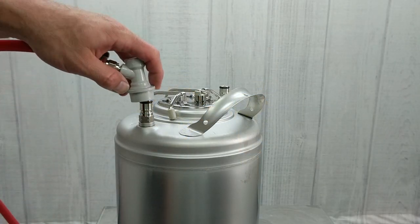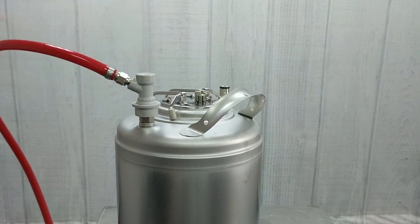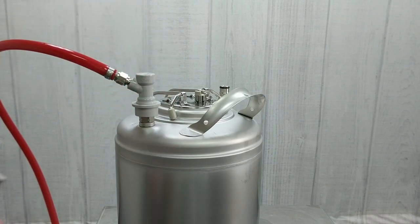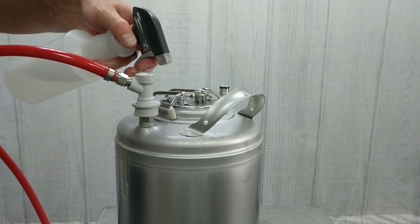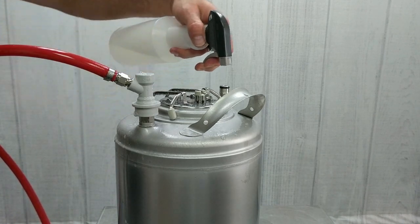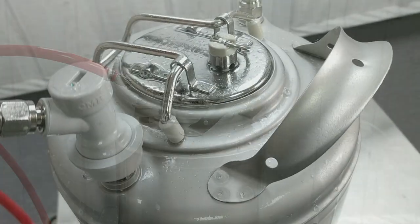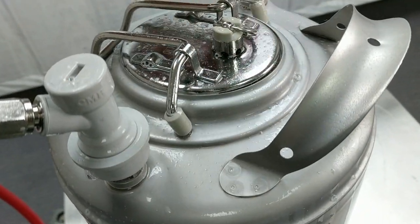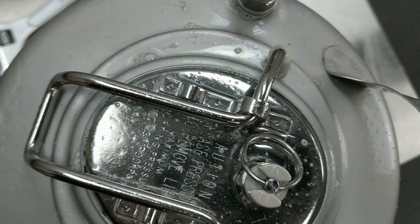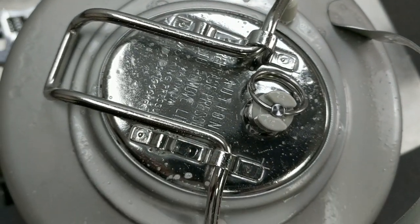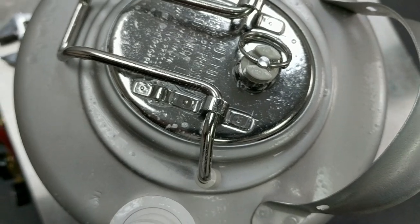Lastly, with gas running through your system and your keg pressurized, spray the entire top side of your keg that you're using. Spray around both the liquid in the gas post as well as the keg lid. Most common leaks from a keg are around the lid and this is usually due to an old gasket or if the lid is not seated correctly. No bubbles seem to be forming so we're good here as well.